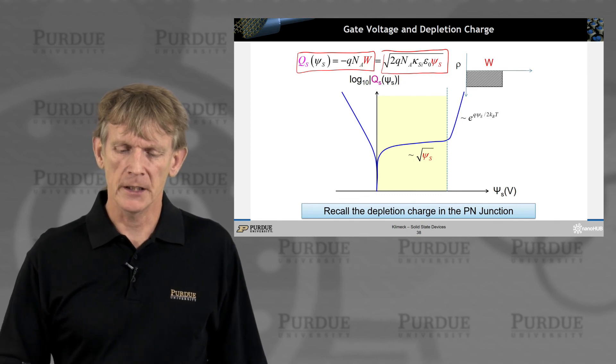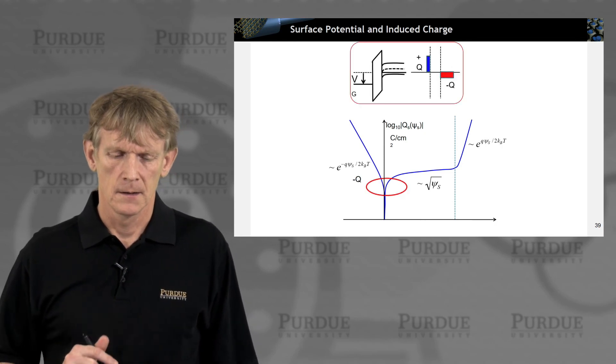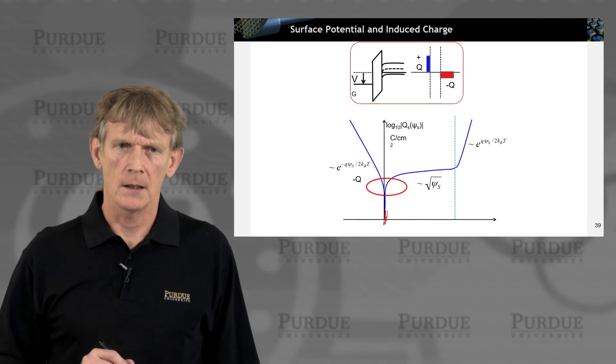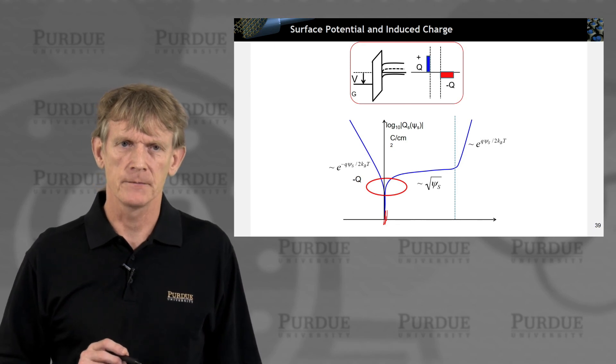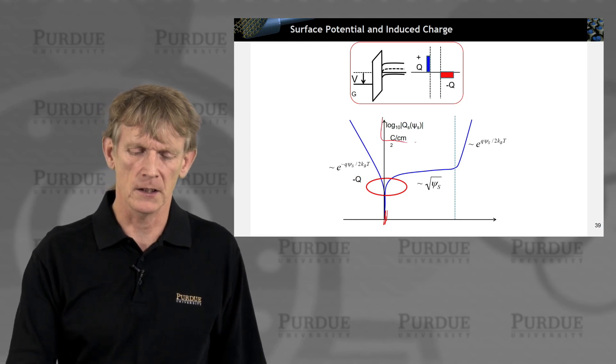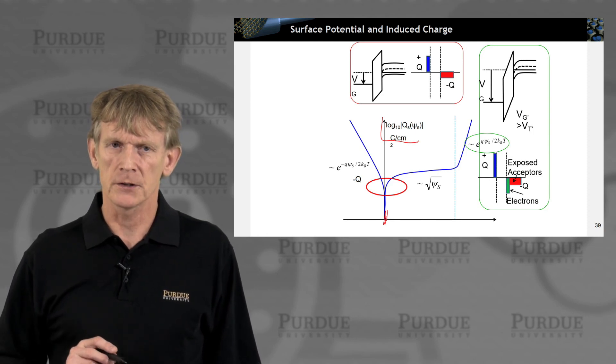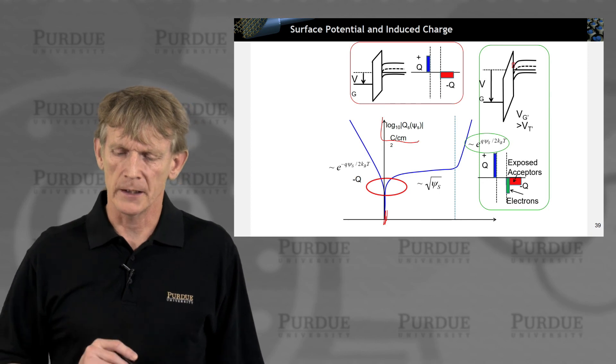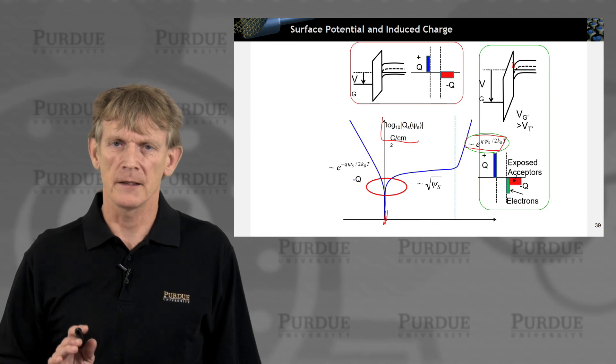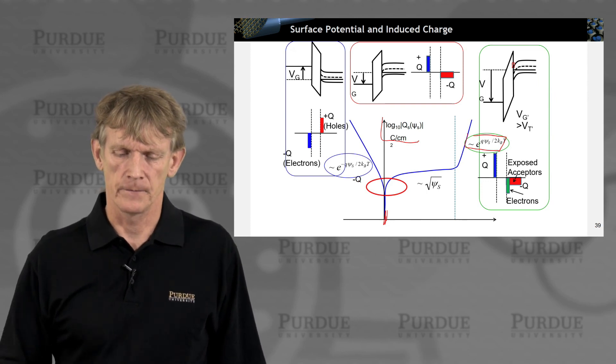Now, how do we get to this exponential? At zero surface potential, we said there's zero charge. We're balanced between accumulation and depletion, so there's zero charge and this is on a log scale. And if we are now going towards inversion, we're starting to want to put electrons up there, this will go as an exponential, as I mentioned, and we'll derive where this exponential comes from in the next few slides. On the other side, this also goes as an exponential.